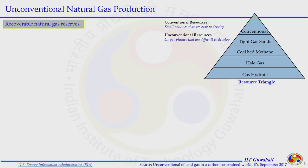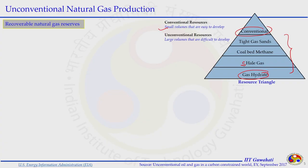If we look at the recoverable natural gas resources on the resource triangle diagram, it qualitatively shows different gas types in terms of their share of total natural gas. On top we have the conventional source — a small amount compared to the large unconventional sources: tight gas sands, coal bed methane, shale gas, and gas hydrate. Gas hydrate is at the bottom, representing the largest part. Conventional resources are small volume and easy to develop, while unconventional resources are large volume and difficult to develop. Technology intervention is still required to recover these resources economically.